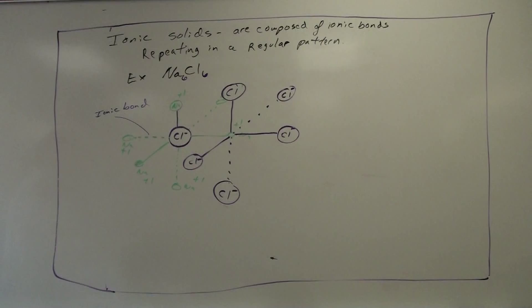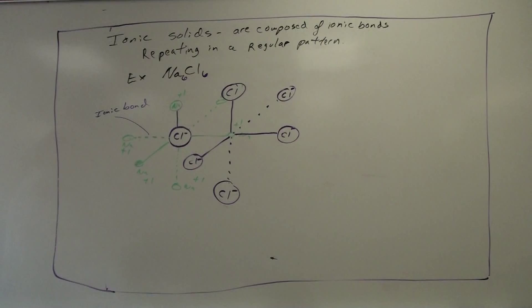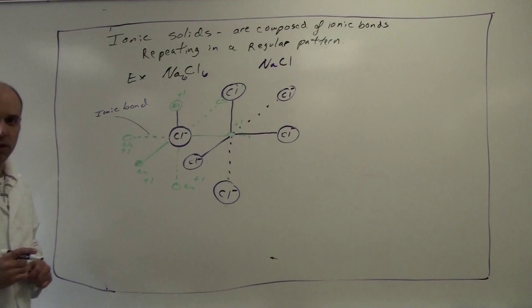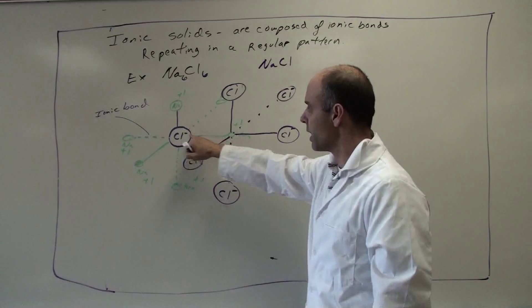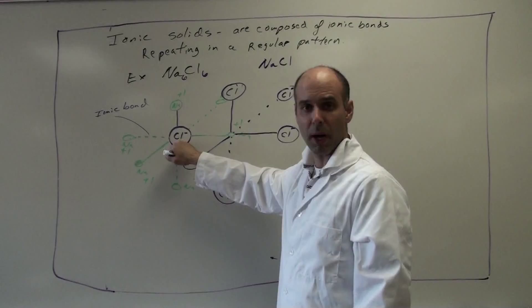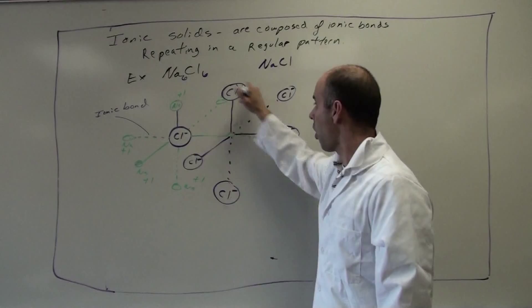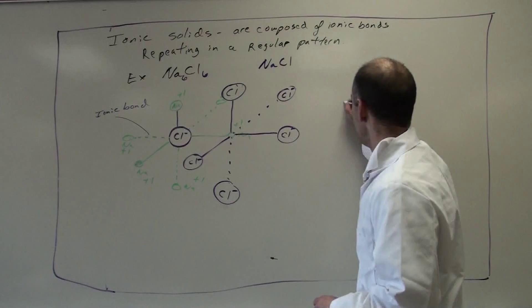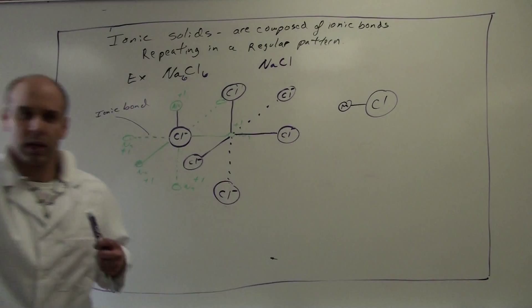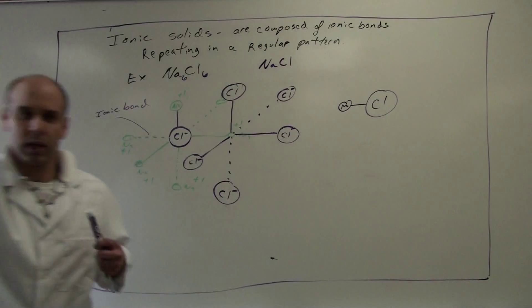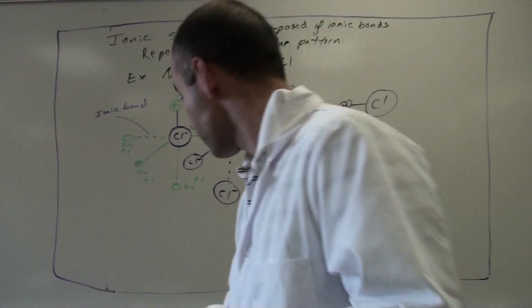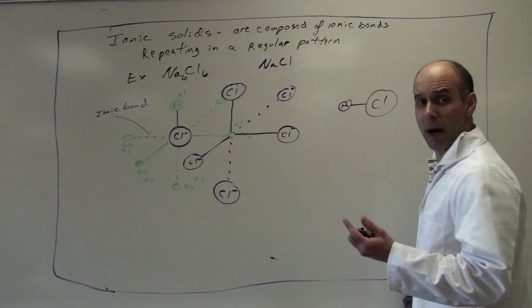So you have NaCl6, but if you reduce that, you end up with NaCl — a one-to-one ratio. Technically, it is incorrect to say a molecule of sodium chloride, because you cannot tell which atom is bonded to which atom. This chlorine is bonded to all six sodiums, and this sodium is bonded to all six chlorines, and the pattern continues on and on. So instead of saying a molecule of sodium chloride, you should say formula unit.